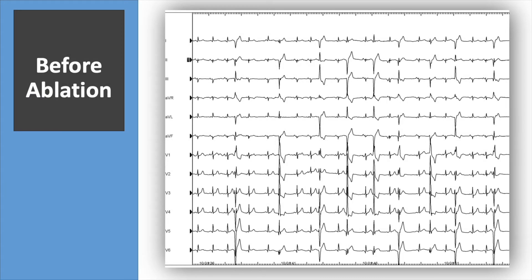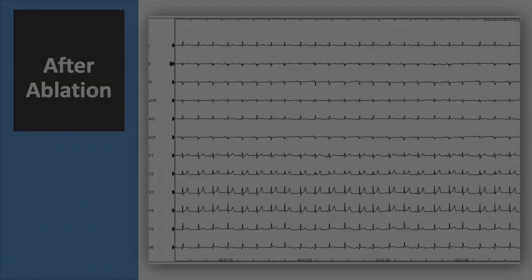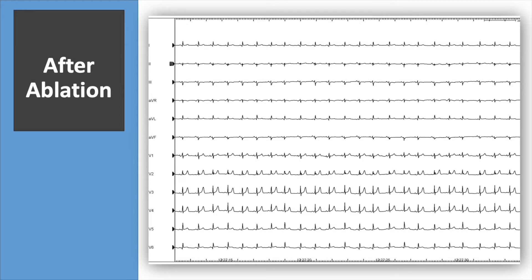Here we see the ECG before starting the ablation, showing frequent polymorphic PVCs. And in the next slide, we will see the ECG after catheter ablation, which shows sinus rhythm and no PVC.